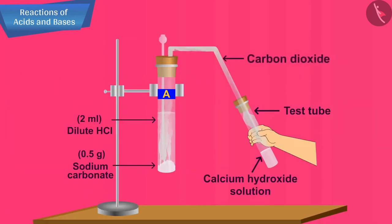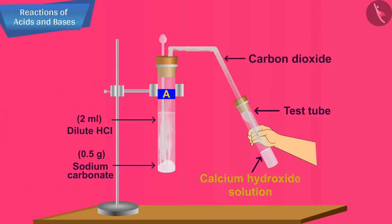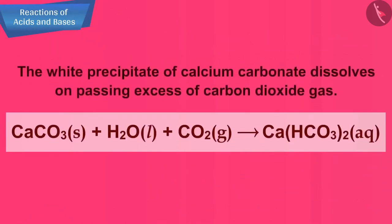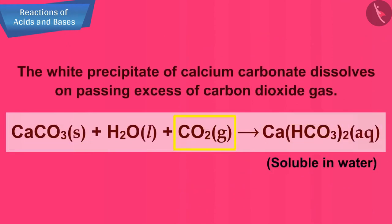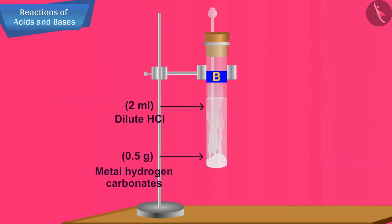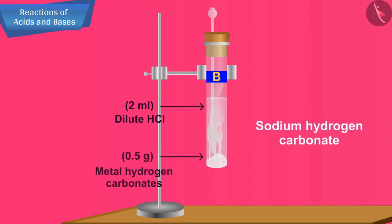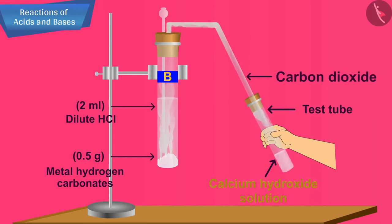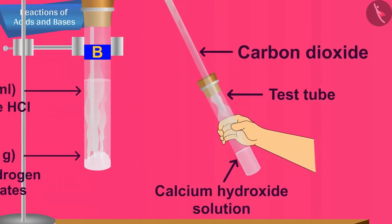Keep on passing carbon dioxide through the milky lime water for some time — the lime water becomes clear again. This shows that the white precipitate of calcium carbonate dissolves on passing excess carbon dioxide gas. We can repeat this experiment by replacing metal carbonate with metal hydrogen carbonate (sodium hydrogen carbonate). Again, we will get carbon dioxide gas which turns lime water milky, and on passing excess CO2, the milky lime water will become clear once again.